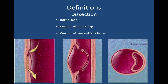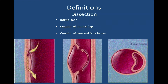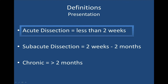A dissection is basically an intimal tear that propagates through the wall, creating a flap and re-entering, most often distally. If the dissection creates a weakness in the aortic wall, it will obviously form an aneurysm. It's important to differentiate between acute and chronic dissections.